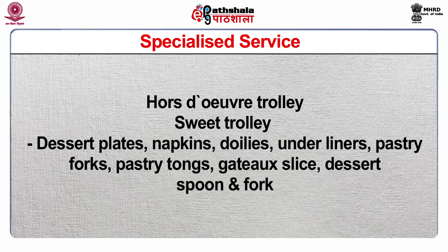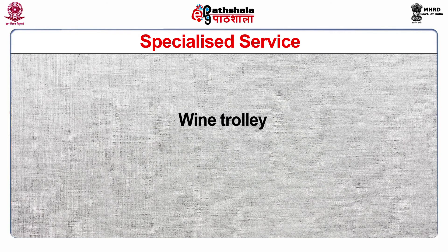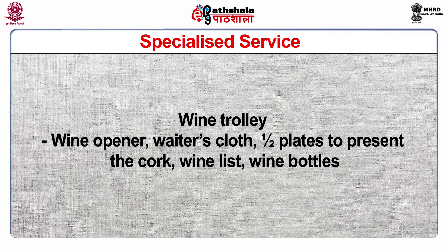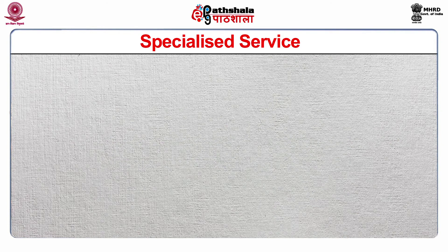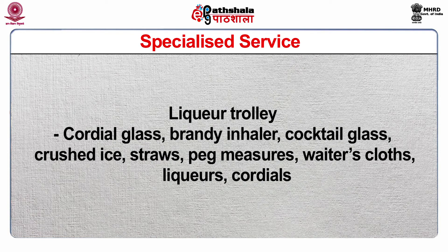Number 5 is the hot plate trolley. Number 6 is the sweet trolley or dessert trolley — on which dessert plates, napkins, underliners, pastry forks, gateau slice, tongs, dessert spoon and fork are placed. Number 7 is the wine trolley — on which wine opener, waiter's cloth, plates to present the cork, wine list, and wine bottles are present. Number 8 is the liquor trolley — on which cordial glasses, brandy inhaler, cocktail glass, crushed ice, straws, peg measures, liqueurs, and cordials are placed.